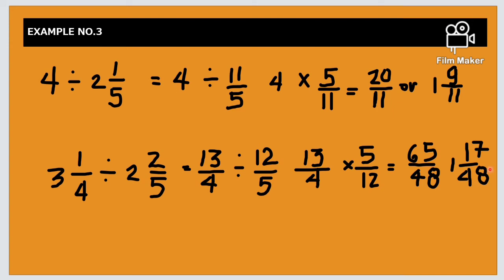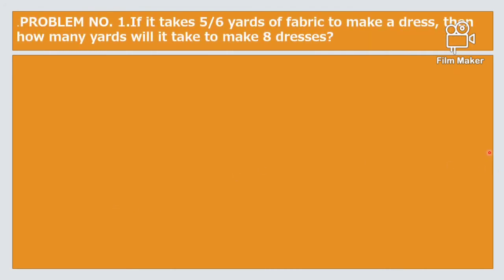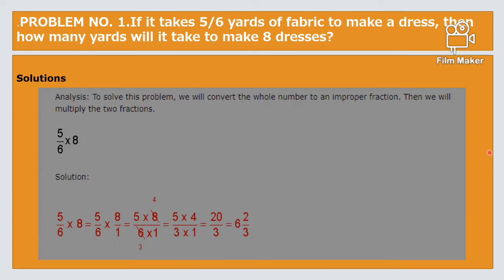Problem number 1: If it will take 5/6 yards of fabric to make a dress, then how many yards will it take to make 8 dresses? Solution: To solve this problem, we will convert the whole number to a proper fraction, then multiply the two fractions. So 5/6 times 8/1. Using cancellation method, 6 and 8 are divisible by 2. 8 divided by 2 is 4, 5 times 4 will be 20, 3 times 1 will be 3. The answer is 6 2/3 yards of fabric to make 8 dresses.